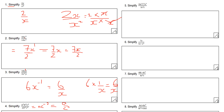Question five: simplify the expression. The coefficient gives 26 fifths since there are no common factors between 26 and 5. s squared divided by s squared goes to 1. t cubed divided by t gives t squared. So the answer is 26t squared u squared all over 5.